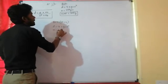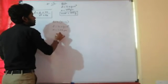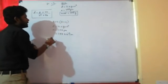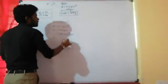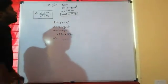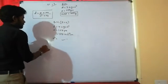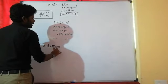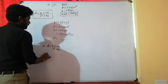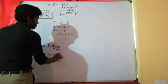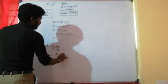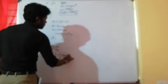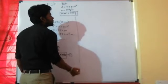First, convert edge length: a equals 288 into 10 to the power minus 10 centimeters. Calculate a-cube. Then use the density formula D equals z into m₀ divided by a-cube into Nₐ. Rearranging to find molar mass m₀: m₀ equals D into a-cube into Nₐ divided by z. This is equation 1.